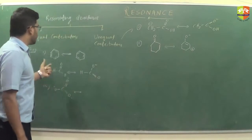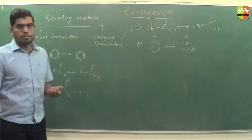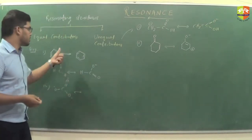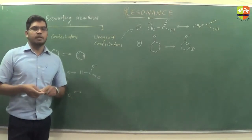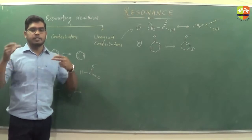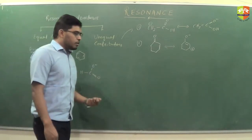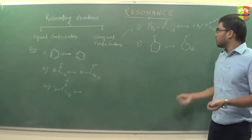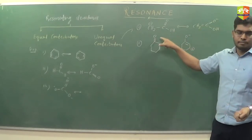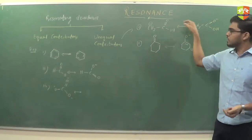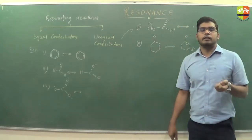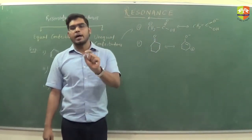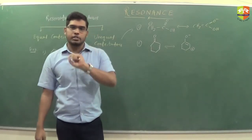In the case of equal contributors, the stability will be more. The molecule which shows equal contributing resonating structures has more stability because the charge distribution is uniform. All these equal or unequal contributors will have different stabilities, and one molecule may be more or less stable than another. According to their stability, they will contribute their properties to the resonating hybrid or real structure.